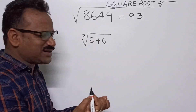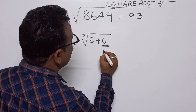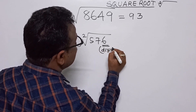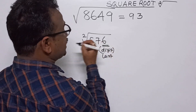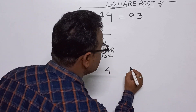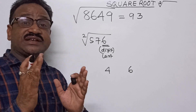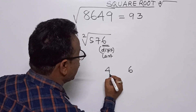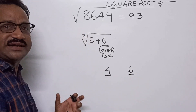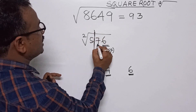Suppose √576. The last digit is 6. So 6 means either 4 will come or 6 will come, because 4²=16 (last digit 6) and 6²=36 (last digit 6). So the possible last digits are 4 and 6. Now draw a line here and cancel these two digits.